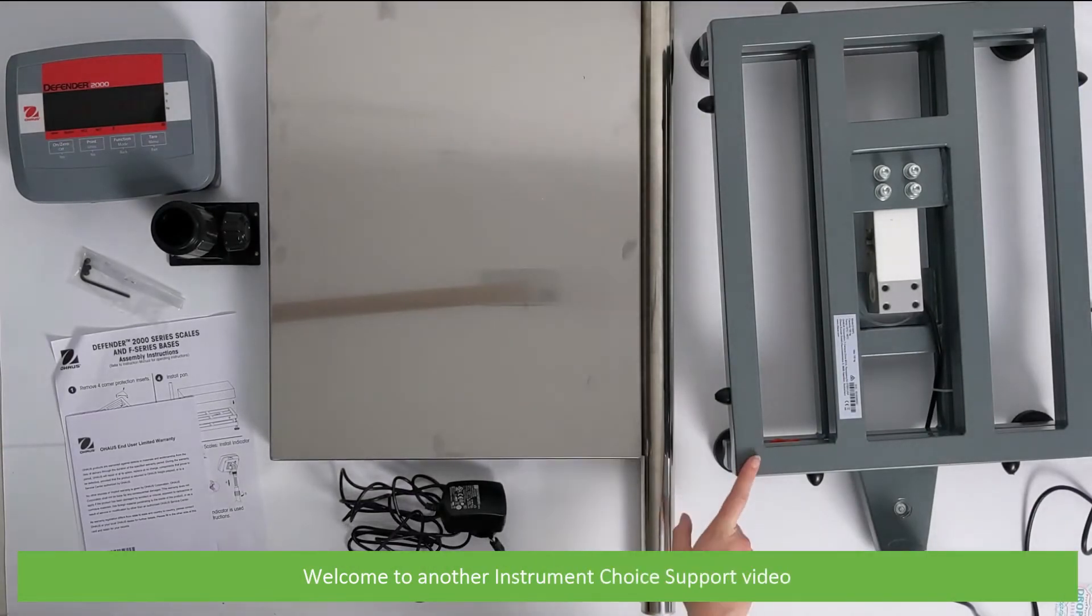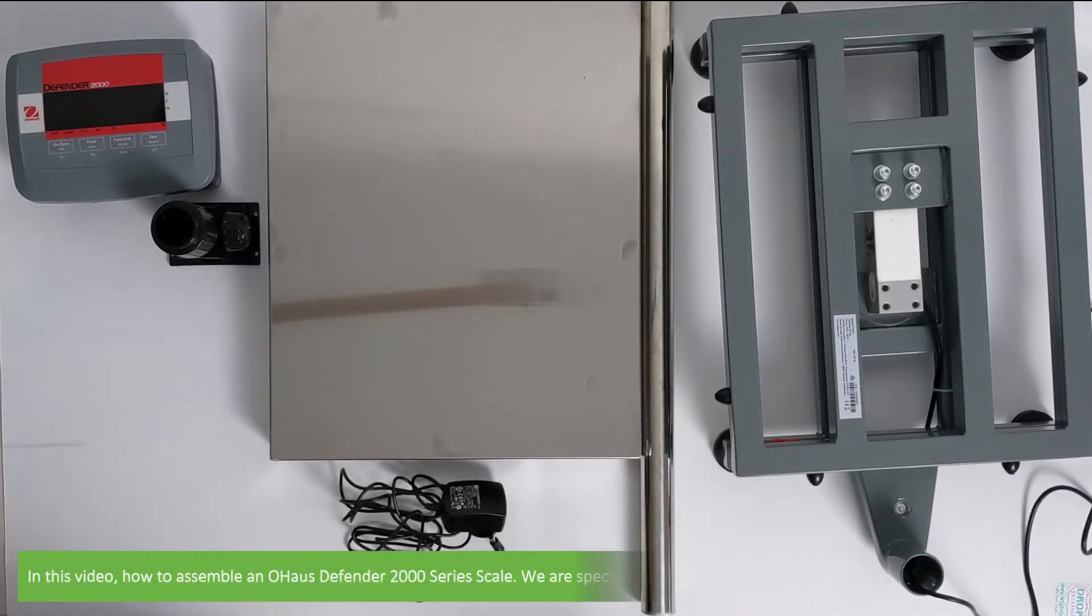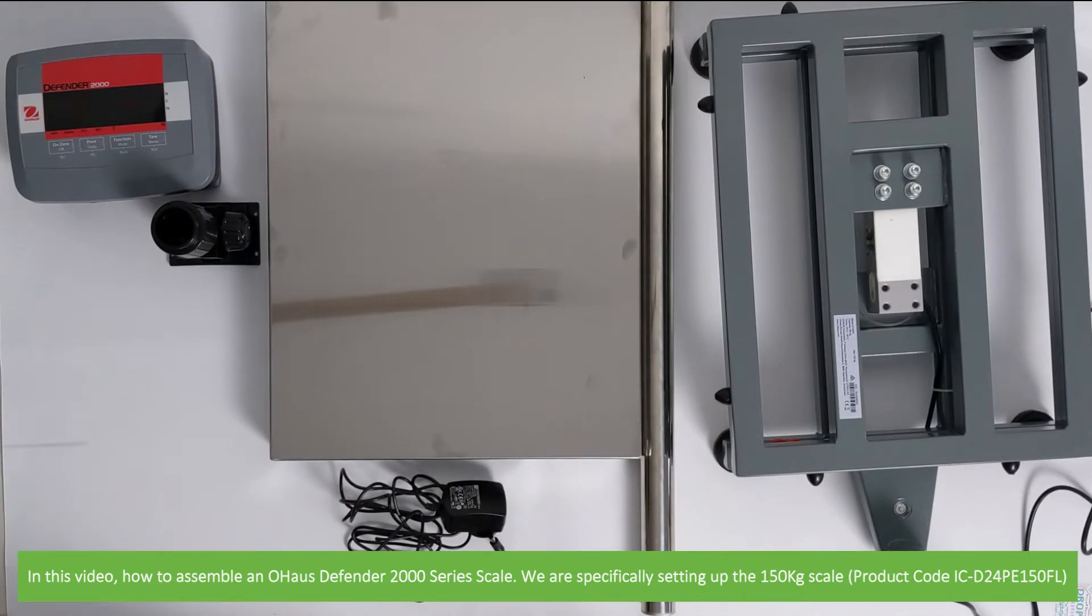Hi and welcome to another Instrument Choice support video. In this video we'll show you how to assemble an O-House Defender 2000 series scale. We are specifically setting up the 150 kilo capacity scale, the product code ICD24PE150FL.